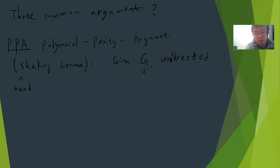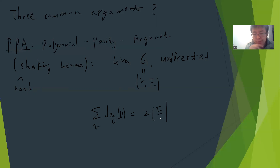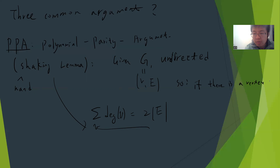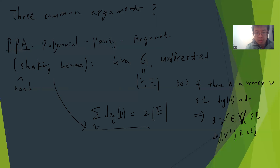I think everybody knows the following: since it's undirected, if you sum over the degree of each vertex, it must equal twice the number of edges. This is the handshaking lemma. Since the sum is twice the edges, if there is a vertex V such that the degree of V is odd, that immediately implies there is another V' in graph G such that the degree of V' is also odd. Because if you have only one odd-degree vertex, there must be another one.